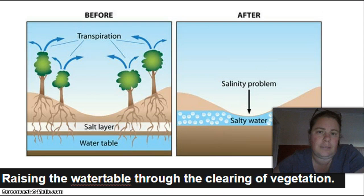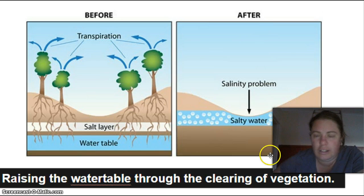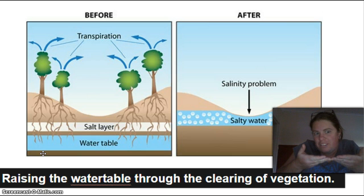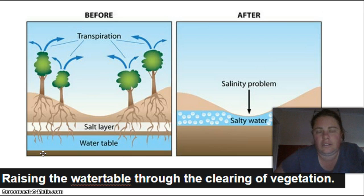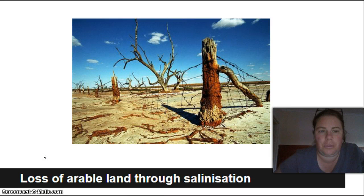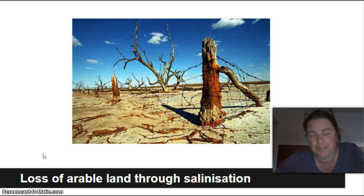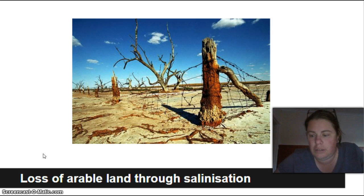Australia has a huge problem with salinity. When we remove plant life, water naturally begins to rise because it's no longer being drawn up by plants. It rises, touches the salt layer, and carries that salt up to the soil surface. Salt makes the land pretty much useless — nothing grows, so no animals come to eat there. We have pockets of this all over Australia because of where we've mass-cleared land, removing every single tree.